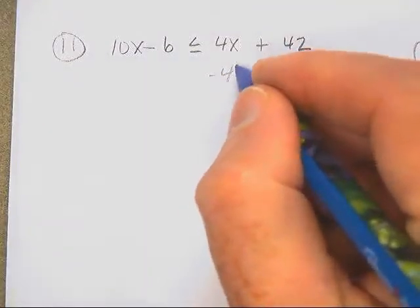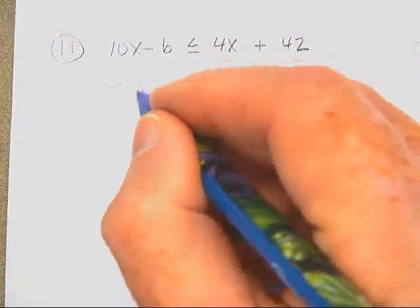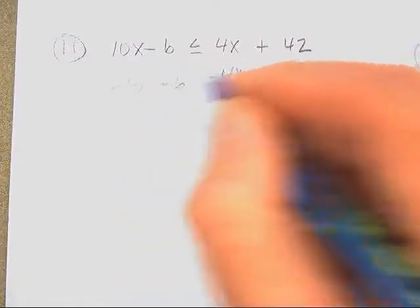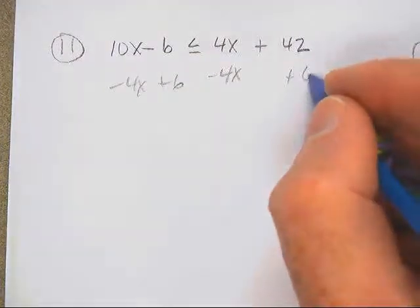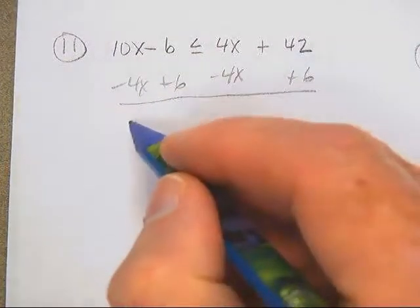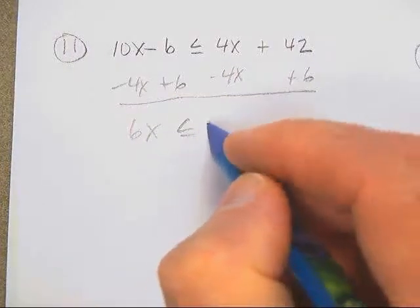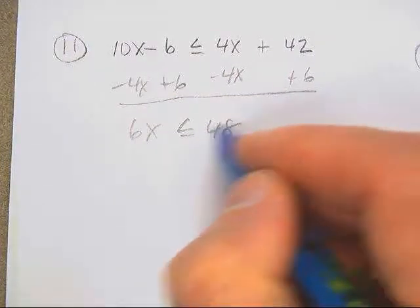Let's subtract 4x from both sides. Let's add 6. 6x is less than 48.